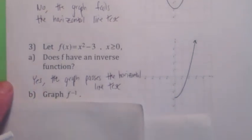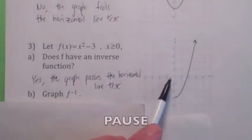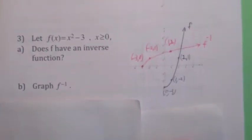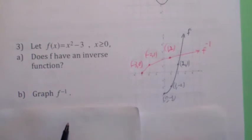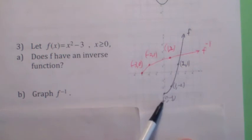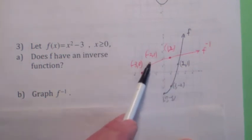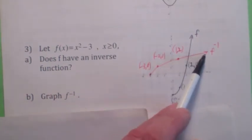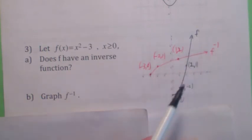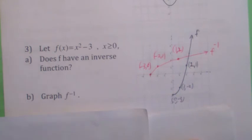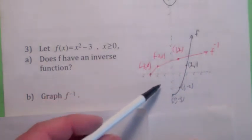Hit the pause button and see if you can graph the inverse function on the same coordinate system. The way you graph the inverse is to plot some points — pick points on f and switch the coordinates. (0, −3) becomes (−3, 0); (1, −2) becomes (−2, 1); (2, 1) becomes (1, 2). Connect the dots to get the graph of f inverse. Notice the graph of f inverse is a reflection of f across the line y = x.